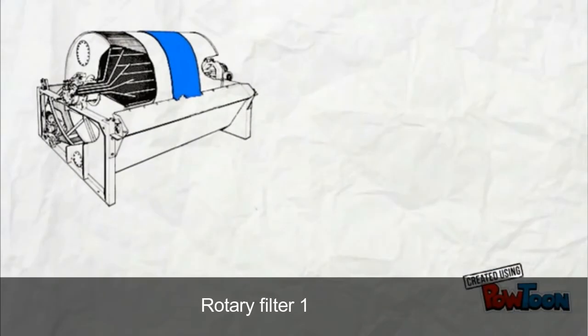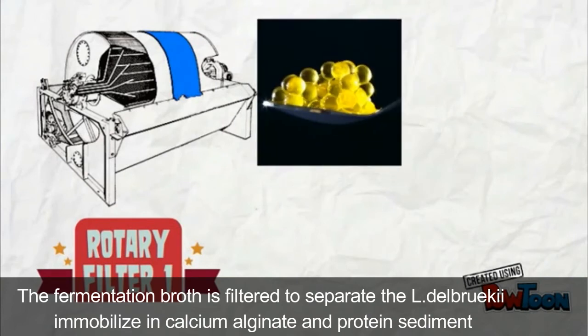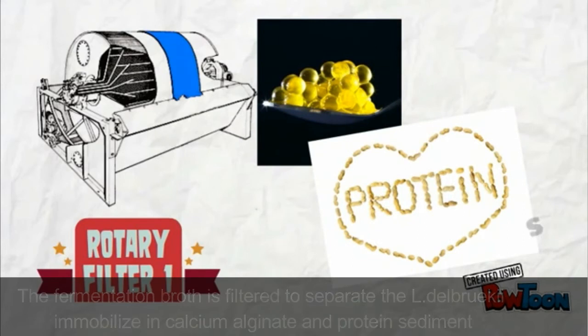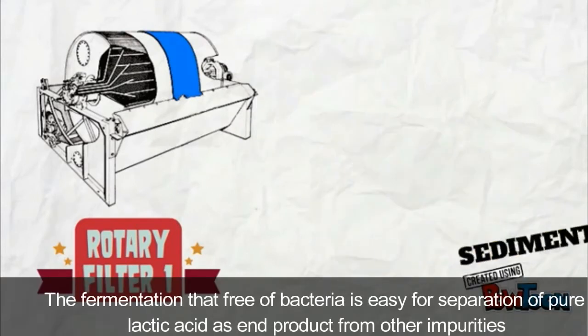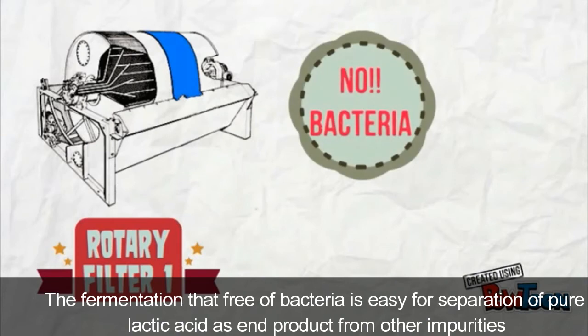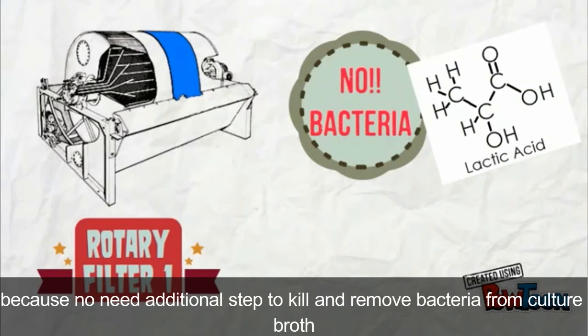The fermentation effluent saturates with immobilized Lactobacillus in calcium alginate and protein sediments. The fermentation broth filled with bacteria is ready for separation of lactic acid. It is produced from the fermentation process because homo fermentation can produce lactic acid without producing other side products from carbohydrate.